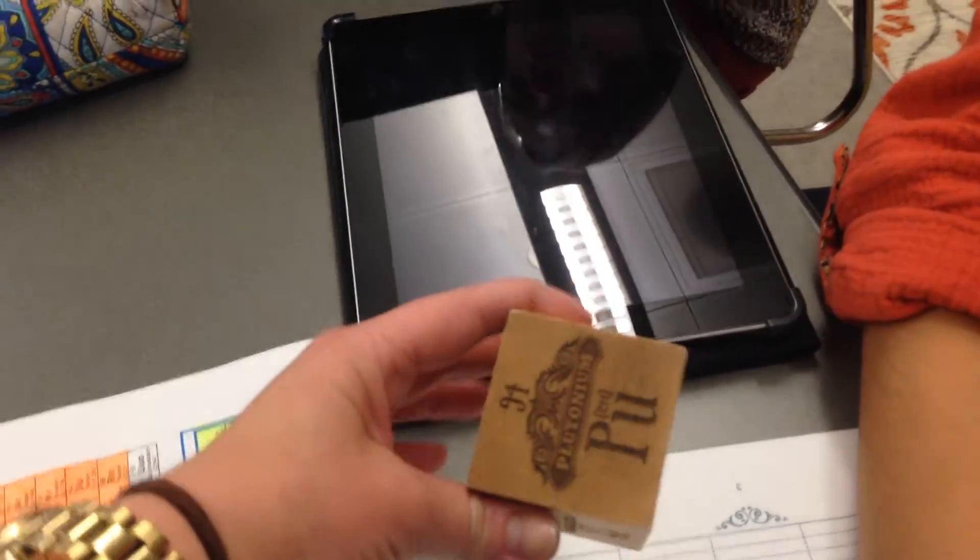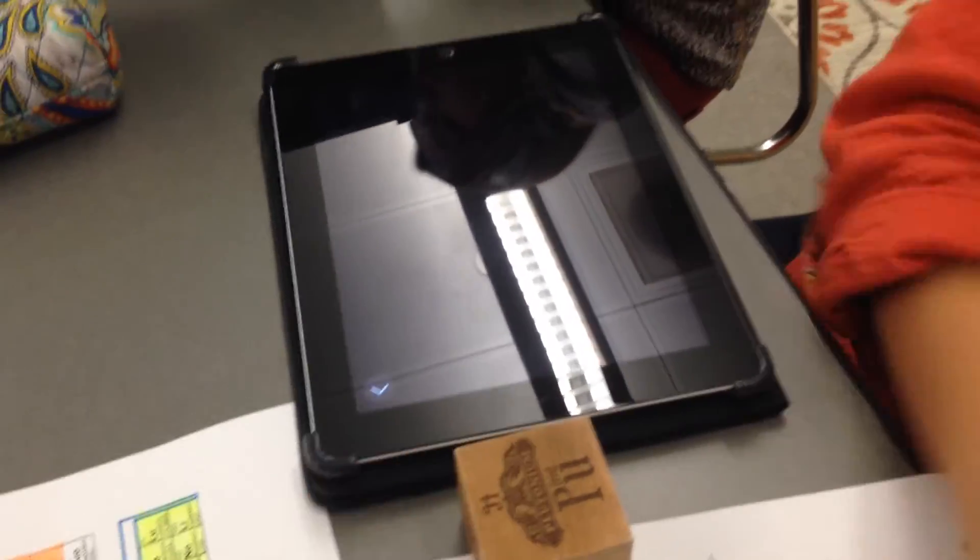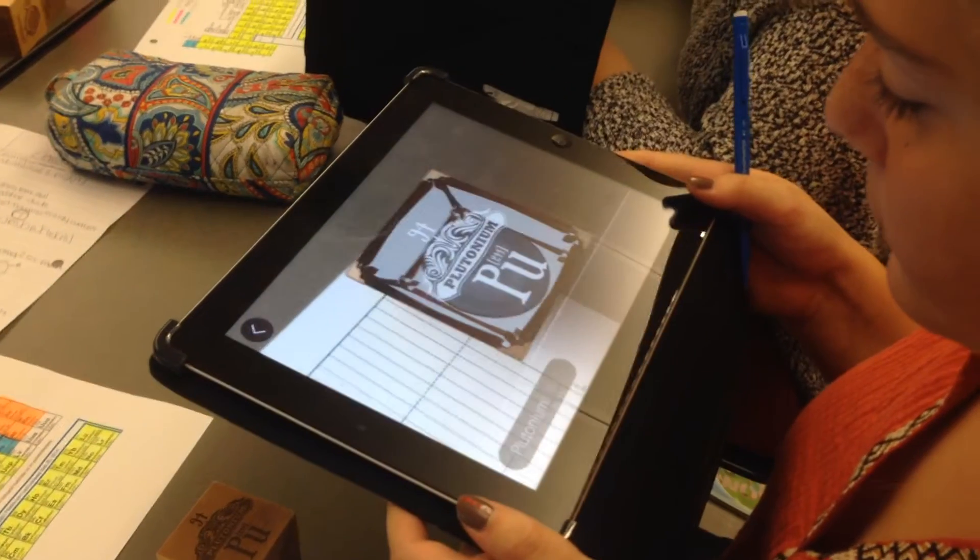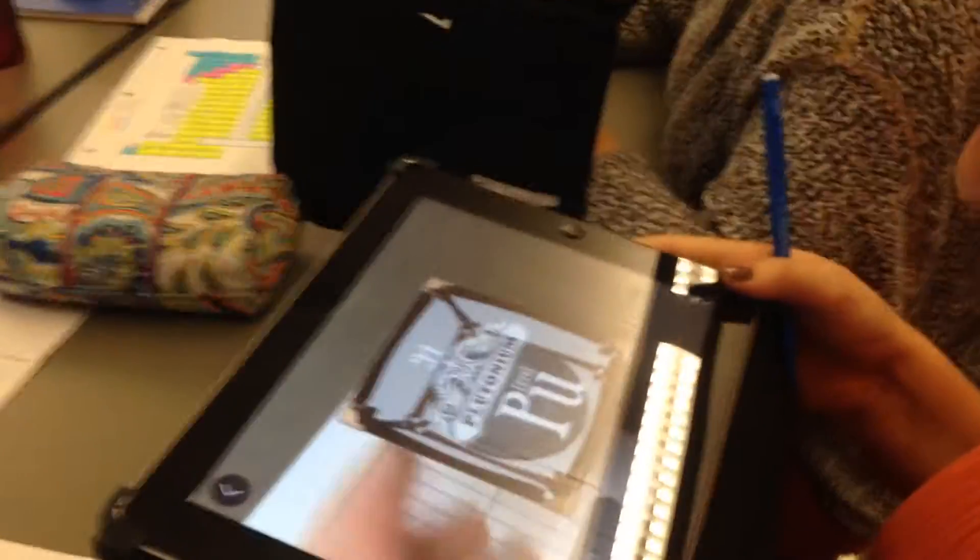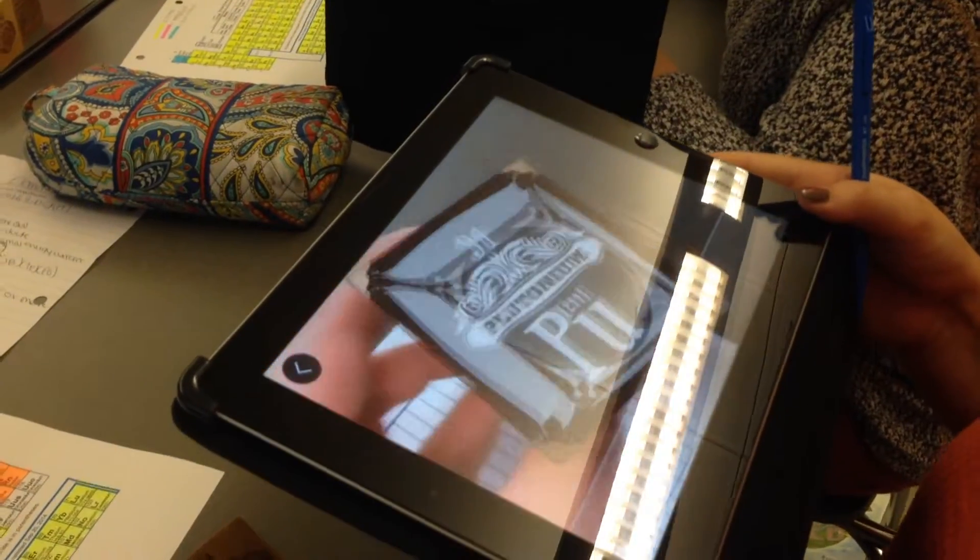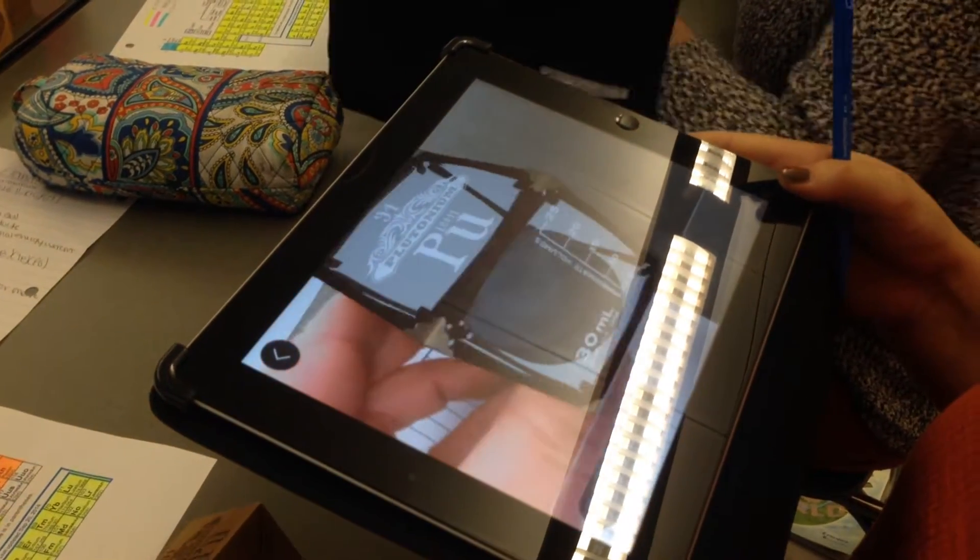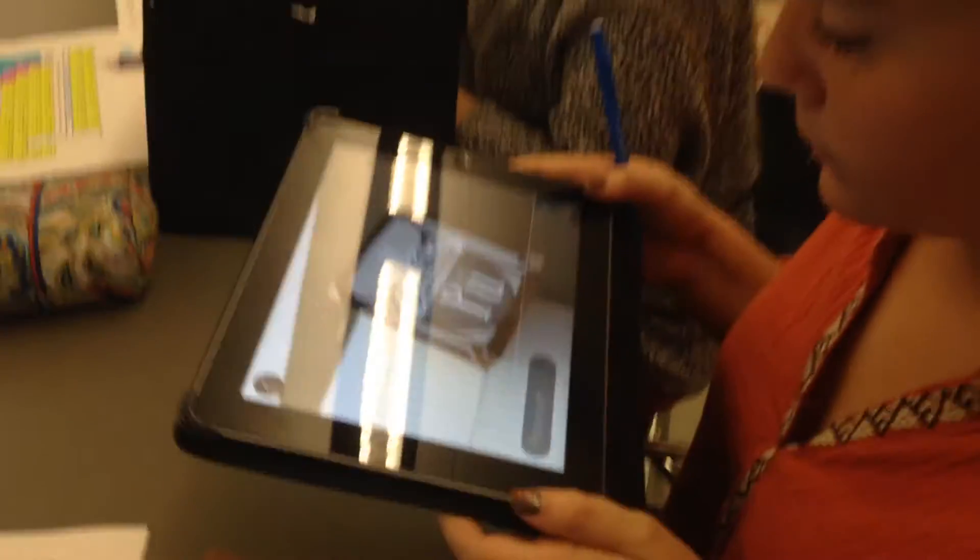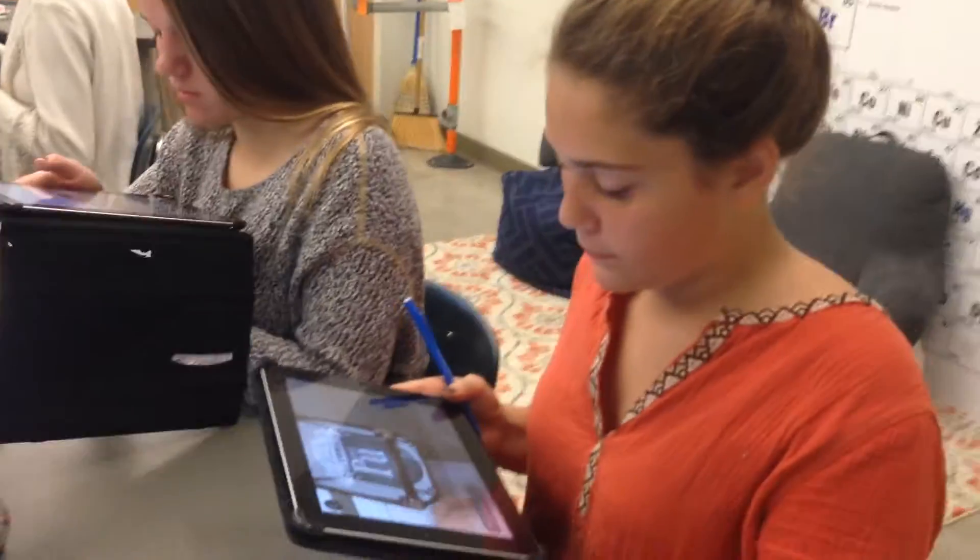So we wouldn't normally have plutonium in our classroom, obviously, because it's radioactive. Why don't you scan that one more time? Let's look at it. So now we can look at the properties of this radioactive substance and kind of look at the different properties of it.